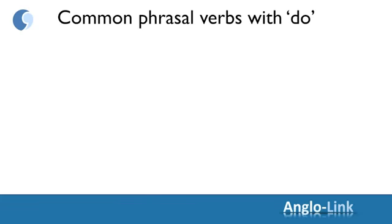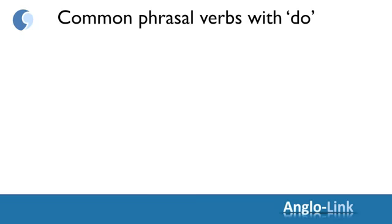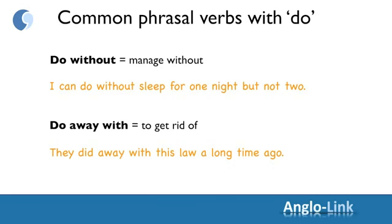Let's look at the phrasal verbs — there aren't many with do, but I've chosen a few. For example, do up, which has two main meanings. One is to renovate — for example, we're doing up our house. Another is to fasten. I've also chosen do without — that's to manage without — for example, I can do without sleep for one night, but not two. And finally, do away with, which is to get rid of — for example, they did away with this law a long time ago.